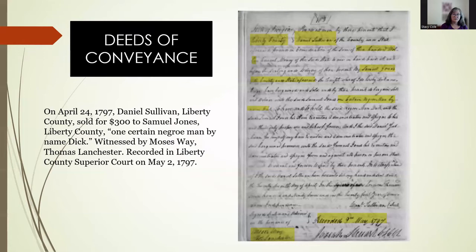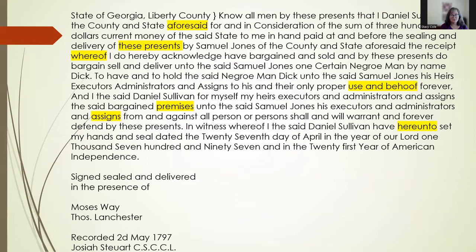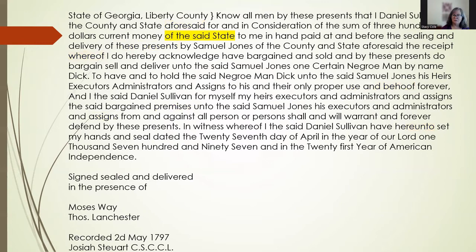Here's an example of a deed of conveyance with the essential information highlighted and the type of abstract I normally do — very simple. The language in these records is so archaic. I've highlighted some words that will be almost impossible to read in old handwriting if you don't already know them. 'Before said' and 'above mentioned' are synonymous. 'These presents' is just a way of saying 'this document.' 'Whereof,' 'hereunto,' 'heretofore mentioned,' 'thereof' are just old ways of joining words. 'Behoof' is the old noun from the verb 'behoove.' And 'assigns' indicates the person to whom Samuel Jones would legally assign his rights. I've included a list of words and phrases with plain-English explanations in your handout.